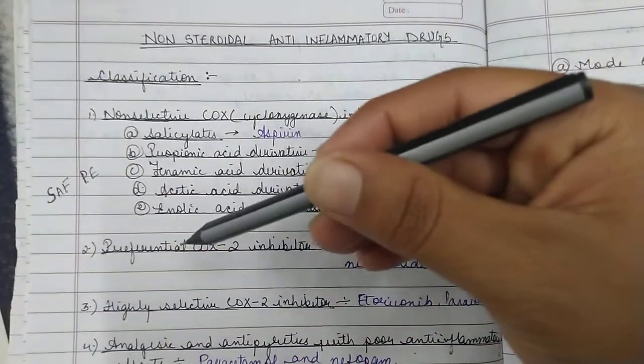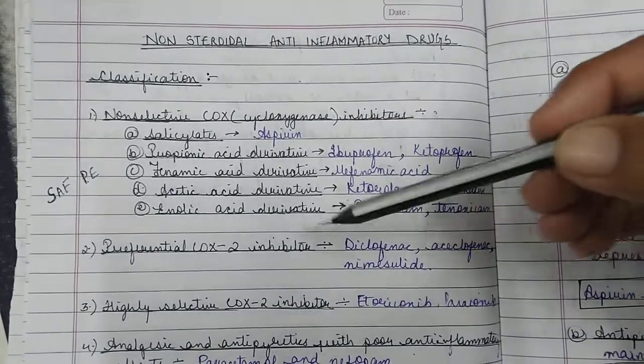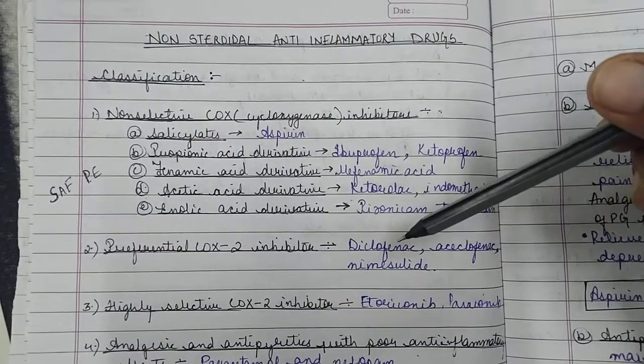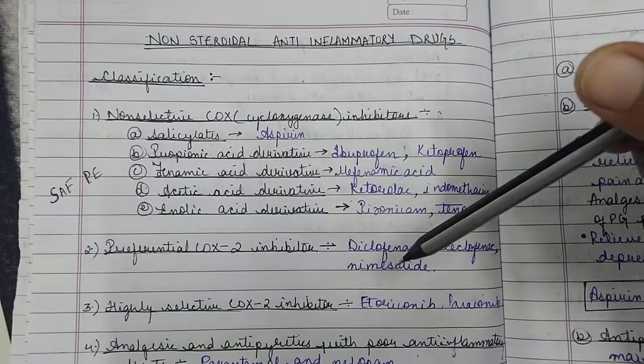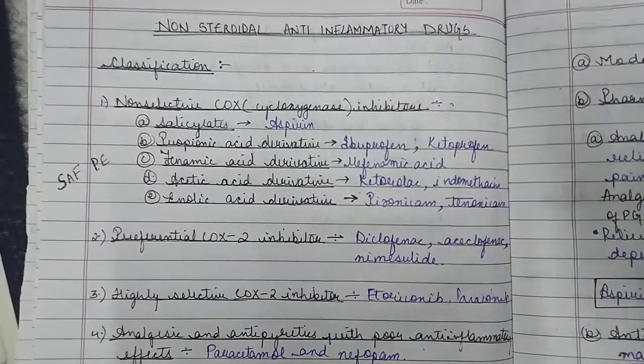Now talking about the second part in the classification, that is preferential COX-2 inhibitor. This includes diclofenac, aceclofenac, and nimesulide.